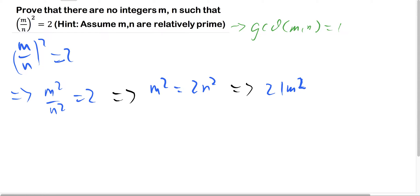So since 2 divides 2n squared, this implies that 2 divides m squared.